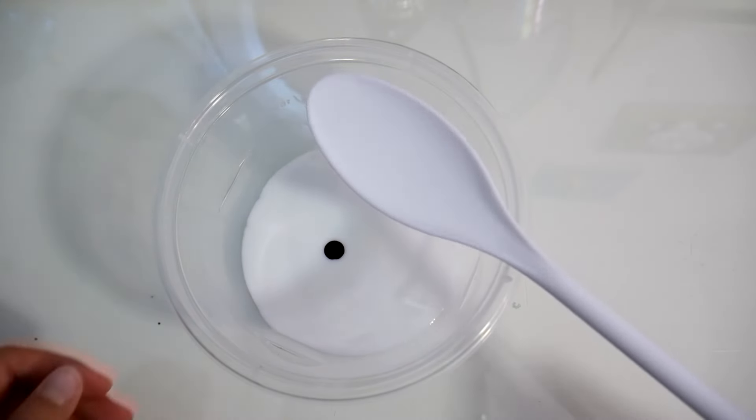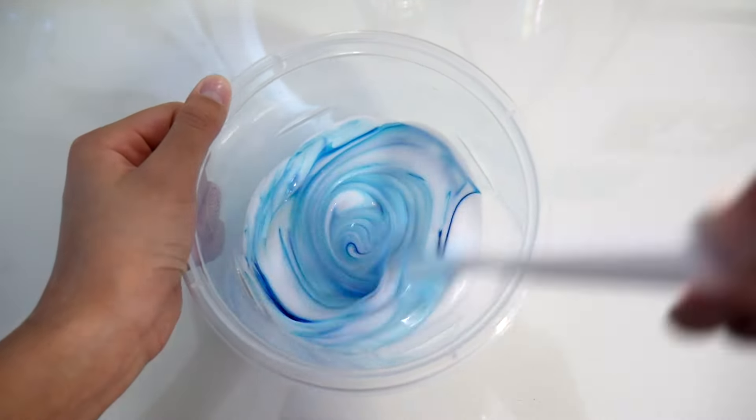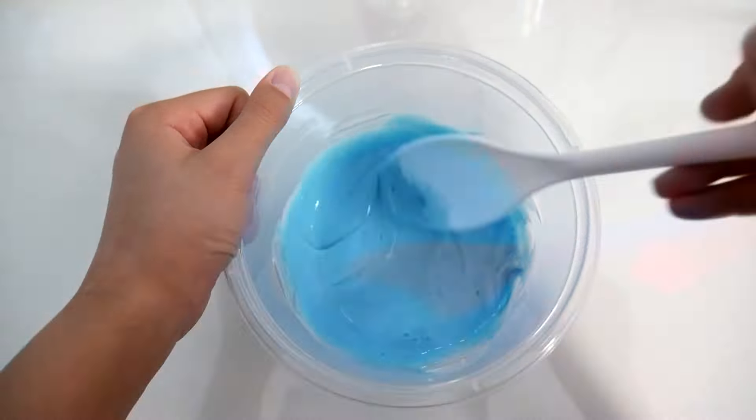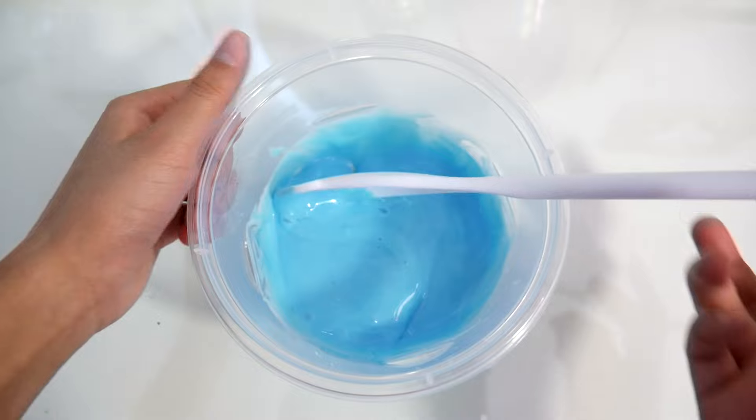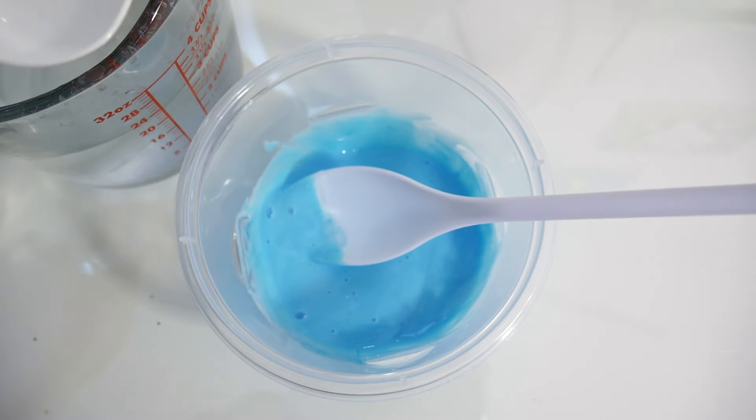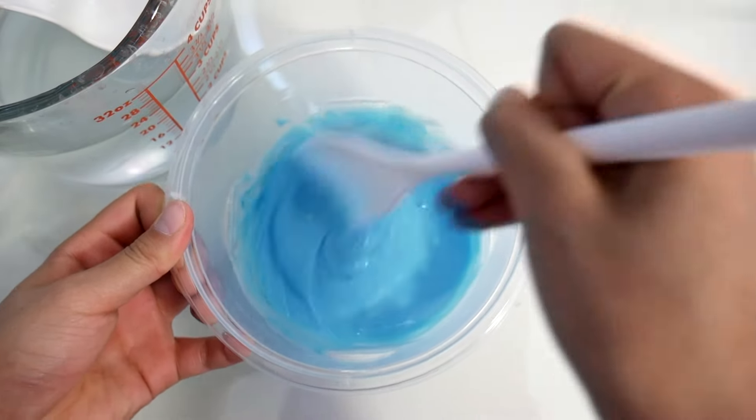Then take your mixing stick, spoon, fork, spatula, hand, and mix up. There you go. Now taking your borax solution or any slime activator, you're gonna put in a little bit at a time until you make some slime.